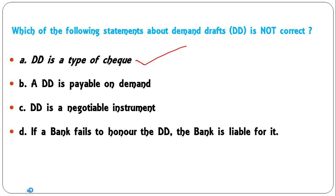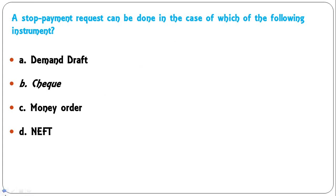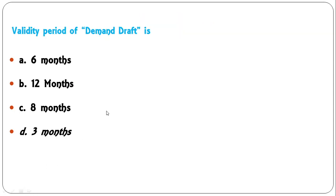Moving to the next question: a stop payment request can be done in the case of which of the following instruments — demand draft, check, money order, or EFT? In the case of a check, you can make a stop payment request by visiting the bank or even through internet banking, so B (check) is the correct answer. The validity period of a demand draft is: 6 months, 12 months, 8 months, or 3 months? The validity of a DD is 3 months — like checks, which also have a 3-month validity — so D is the correct answer.